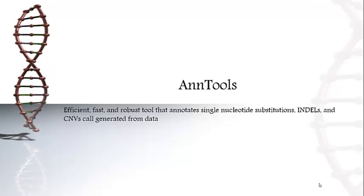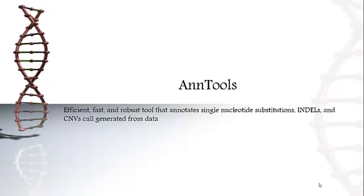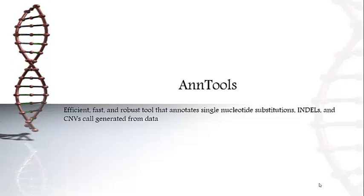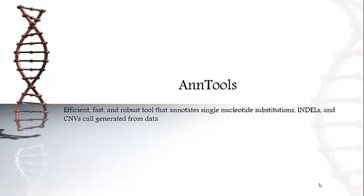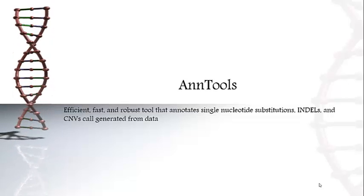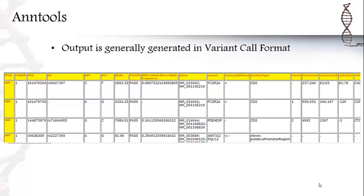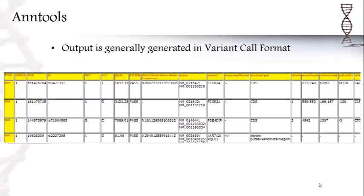Antools is the first tool we will look at. What Antools does is that it provides a fast way to annotate indels and copy number variants and also single nucleotide substitutions. Outputs in Antools are quite long since they provide a lot of information about single nucleotide polymorphisms, indels, and copy number variants. The outputs are generated in variant call format.